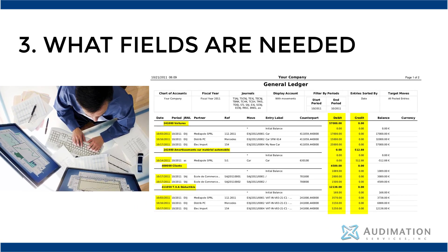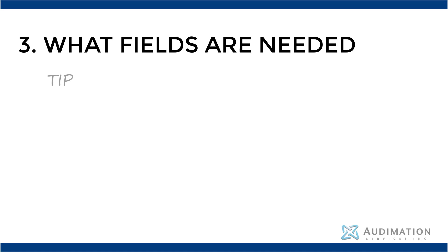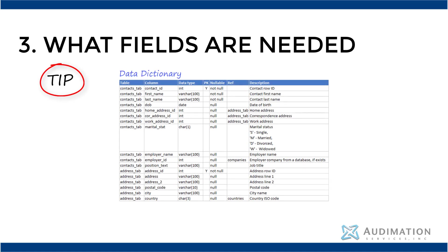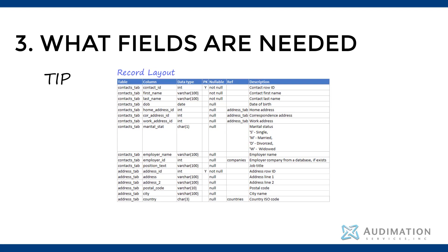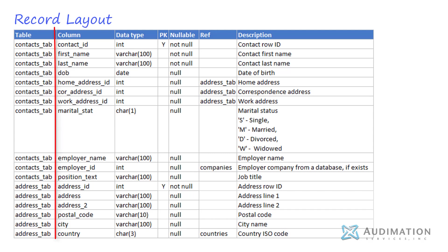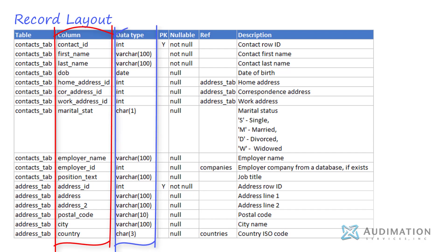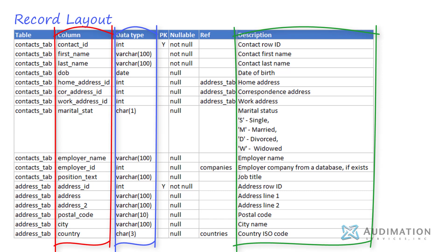As a tip, one item you can request from the IT manager is a document called a data dictionary, also known as a record layout. This document simply contains a list of all the fields in the file you are requesting. What makes this important is that it spells out the name of the fields, the type of field, and a description of what each field is. Some fields may be self-explanatory, such as a debit or credit field, but other fields may not, and so a data dictionary provides us a better understanding and context of the different fields in a file that you want to request.